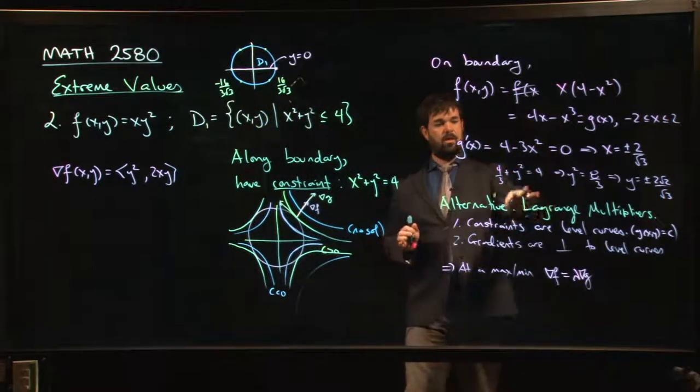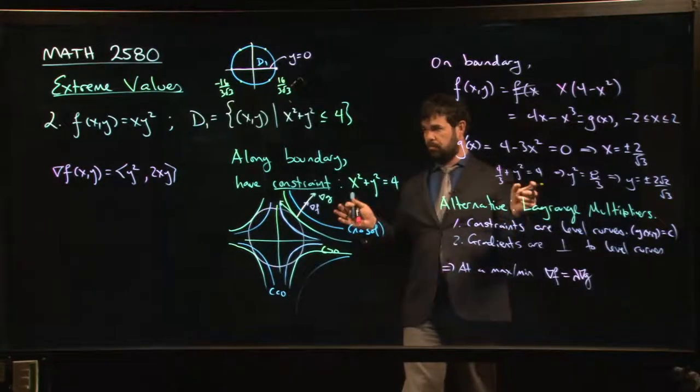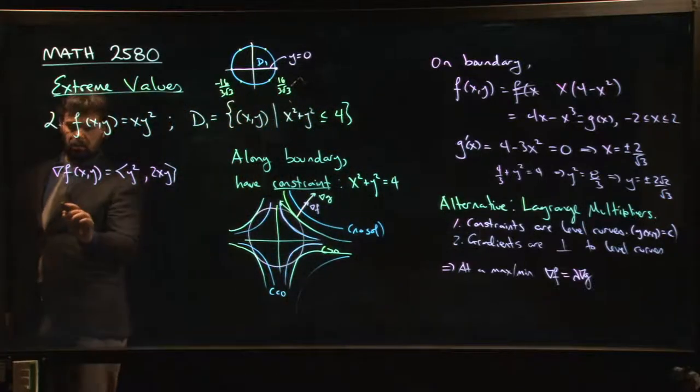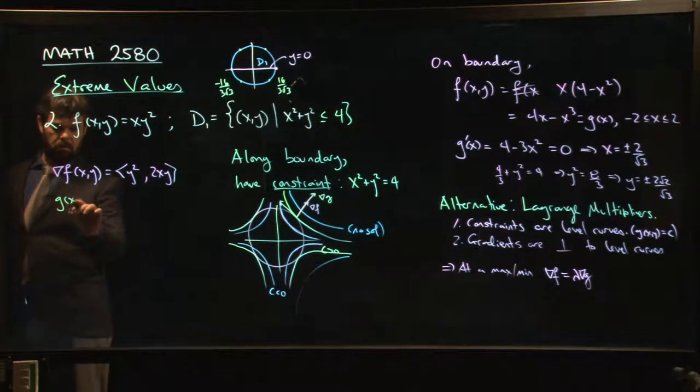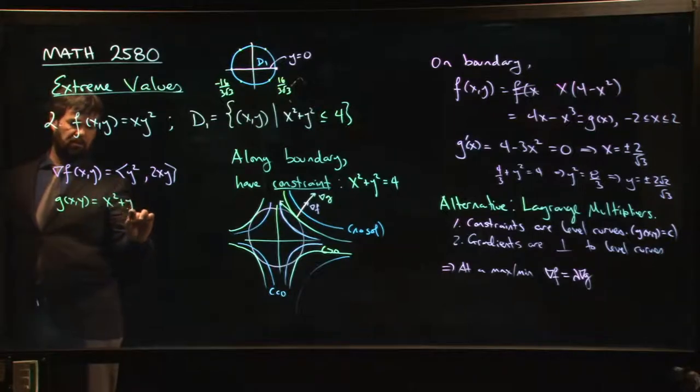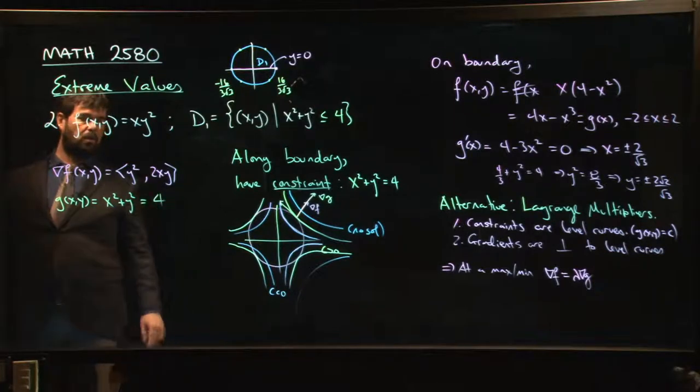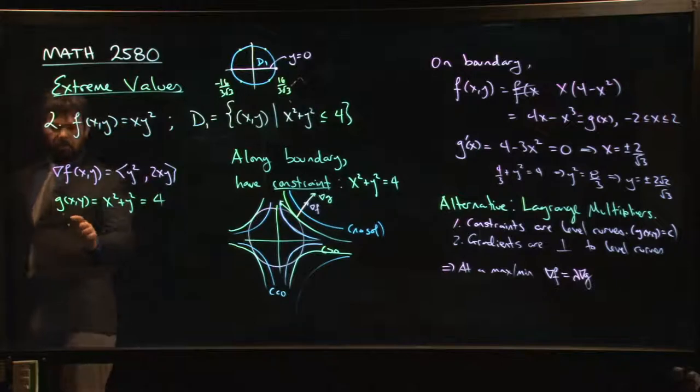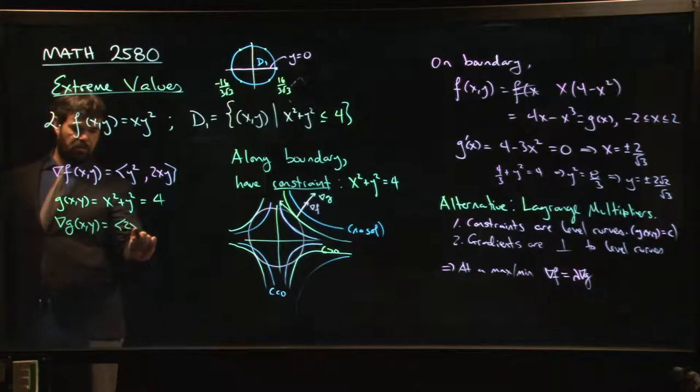So how do you put together this Lagrange multiplier method to solve our problem yet one more way? Well, our constraint in this case would be g of x, y equals x squared plus y squared. That's our constraint function. And we're setting it equal to constant 4. There's our constraint curve.